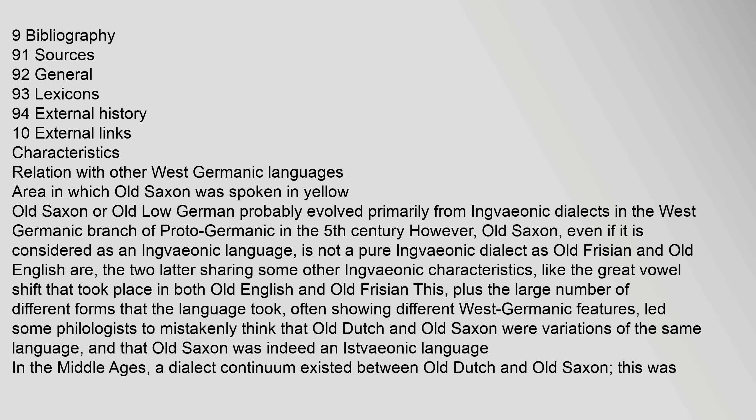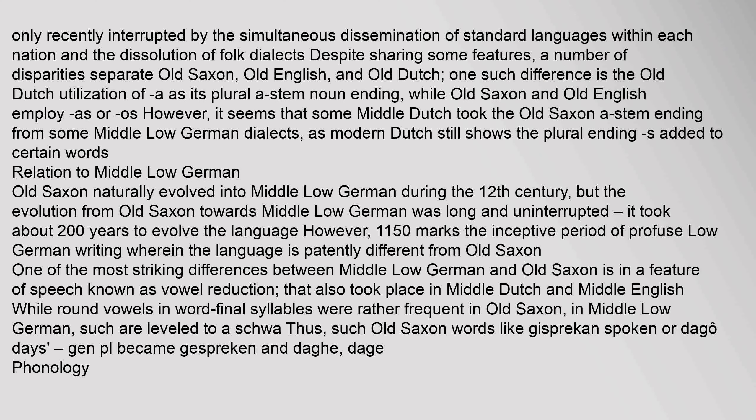A dialect continuum existed between Old Dutch and Old Saxon; this was only recently interrupted by the simultaneous dissemination of standard languages within each nation and the dissolution of folk dialects. Despite sharing some features, a number of disparities separate Old Saxon, Old English, and Old Dutch. One such difference is the Old Dutch utilization of 'a' as its plural a-stem noun ending, while Old Saxon and Old English employ '-as' or '-os.' Old Saxon naturally evolved into Middle Low German during the 12th century, but the evolution was long and uninterrupted.